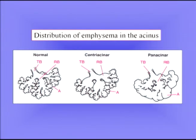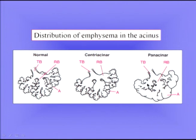The distribution of emphysema in the acinus varies. On the left we see the normal drawing with the terminal bronchiole, respiratory bronchioles, and alveoli. In centriacinar emphysema the disease is limited to the center of the acinus, and the alveoli in the periphery are spared. By contrast, in panacinar emphysema the disease occurs throughout the whole of the acinus. These are very different patterns.